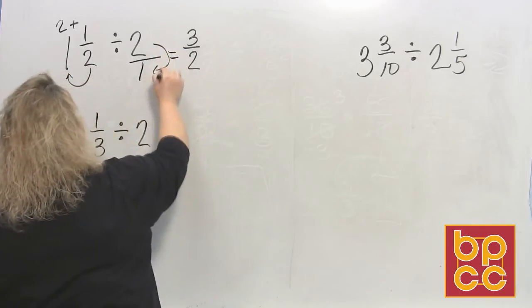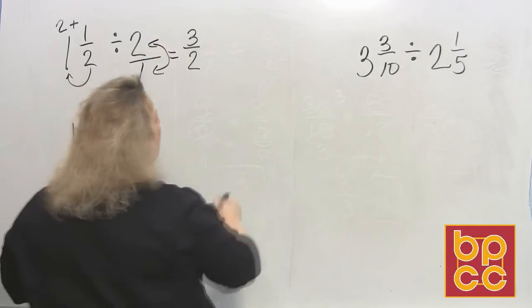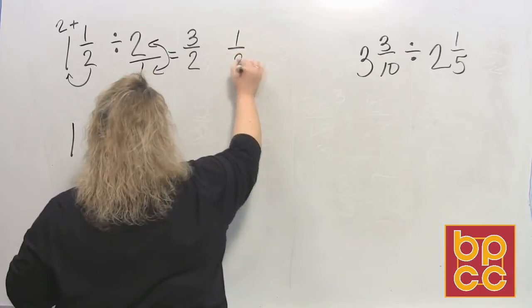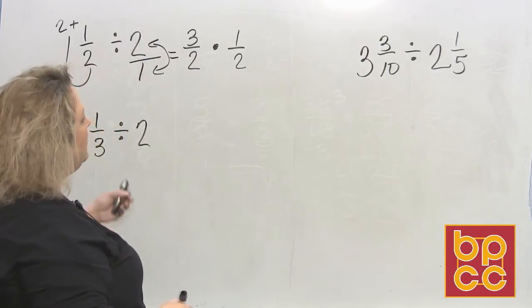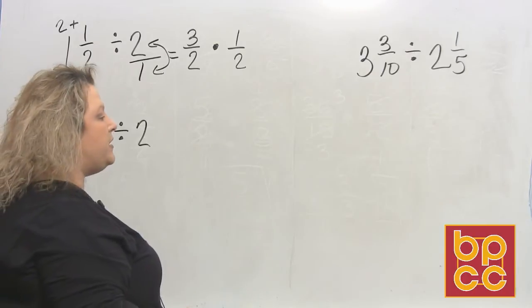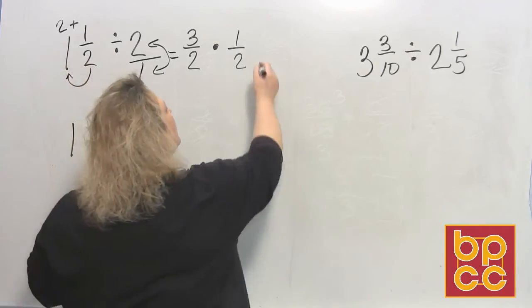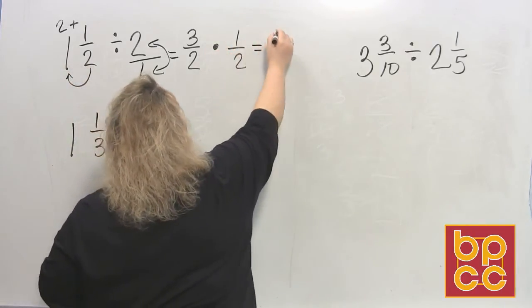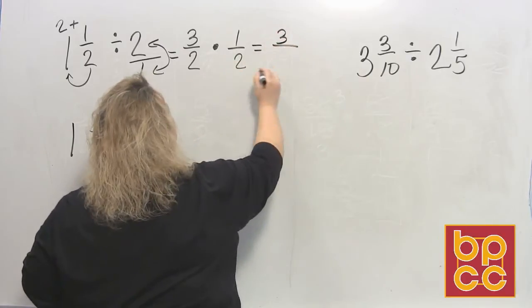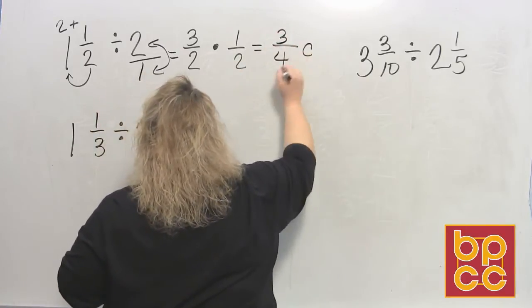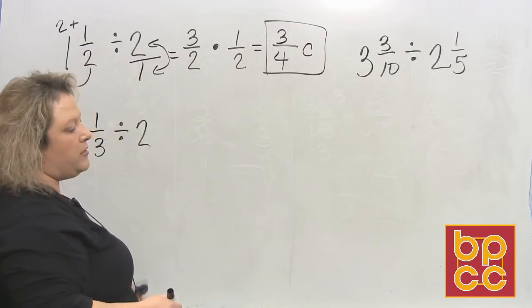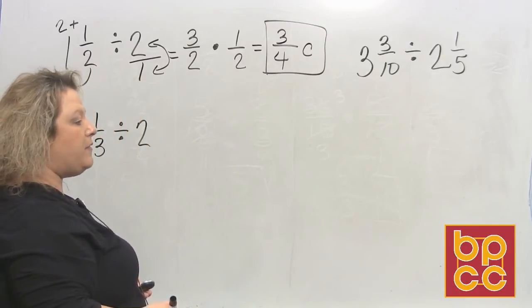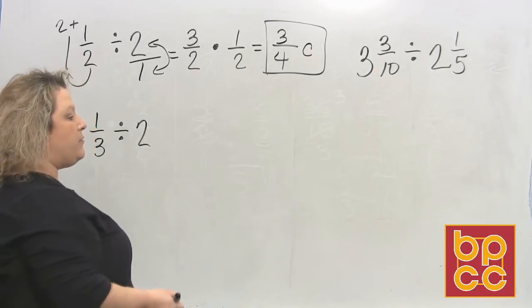And remember you flip the second and multiply. So when I flip the second, now I'm changing two over one to one half and I'm going to multiply that together. Look at my fractions. Can I reduce anything? No. So since I can't reduce anything, I do top times top, bottom times bottom. And that leaves me three fourths of a cup. So from one and a half down to three fourths, if I wanted to half the number of chocolate chips I'm putting in this recipe.